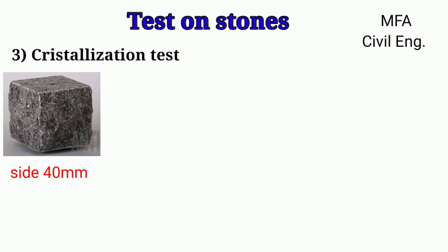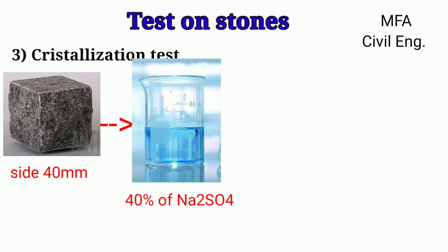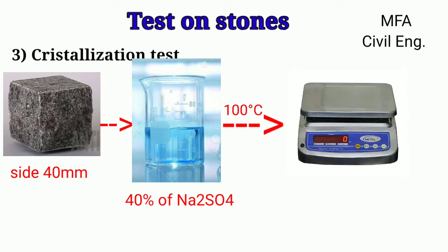Crystallization test: In this test, at least four cubes of stone with a side of 40 mm are dried for about 72 hours. The dried stones are wetted and then immersed in a 14% solution of sodium sulfate for about two hours. The cubes are again dried at 100°C and weighed. The difference in weight before and after immersion is noted. This procedure of drying, weighing, immersing, and re-weighing is repeated at least five times, and each time the difference in weight is expressed as a percentage of the original weight.